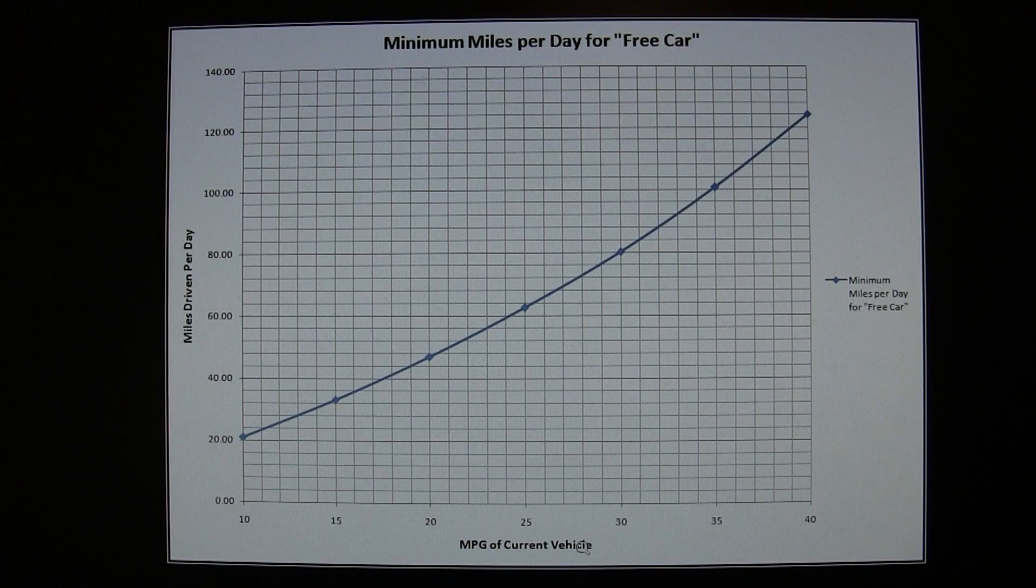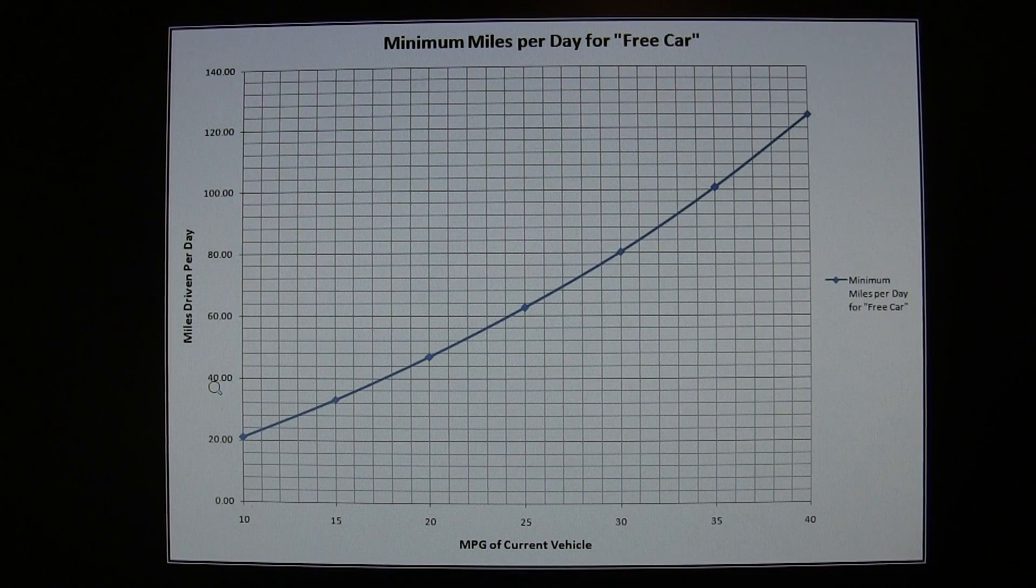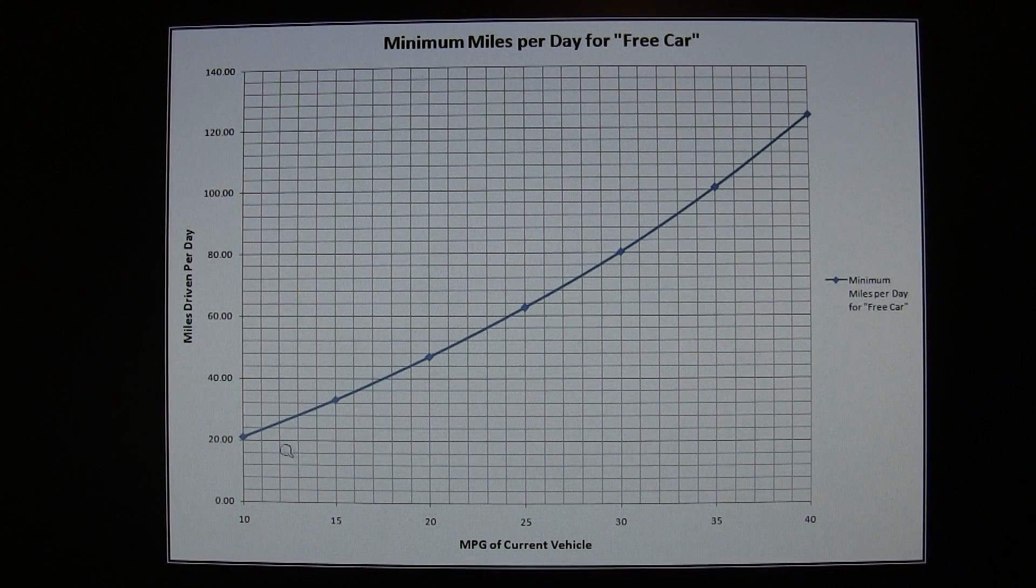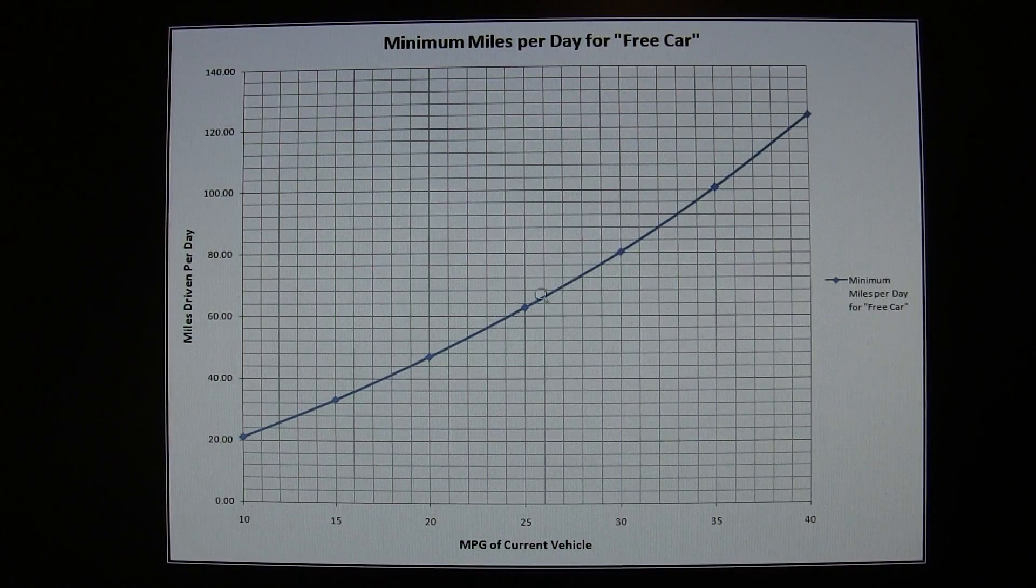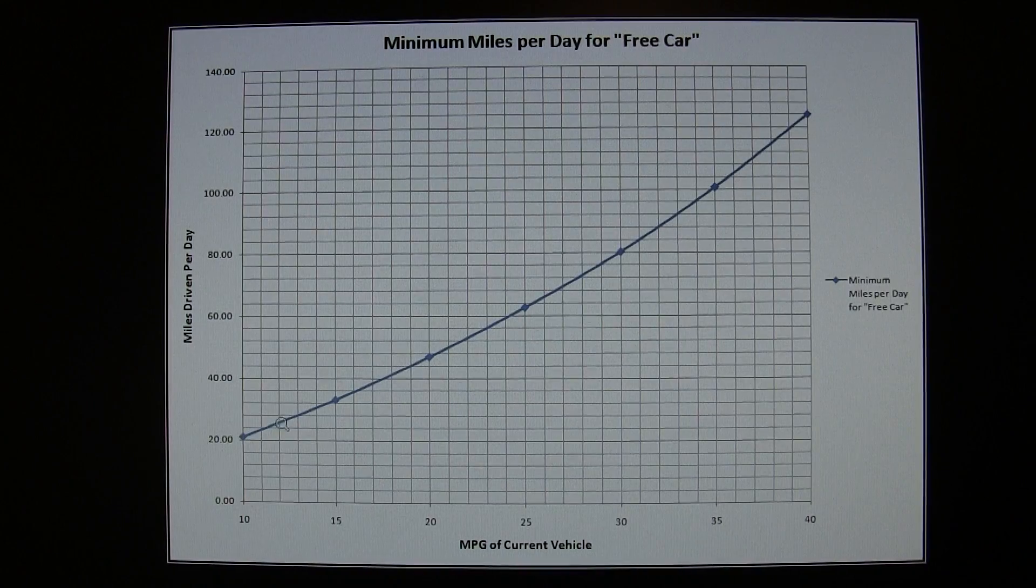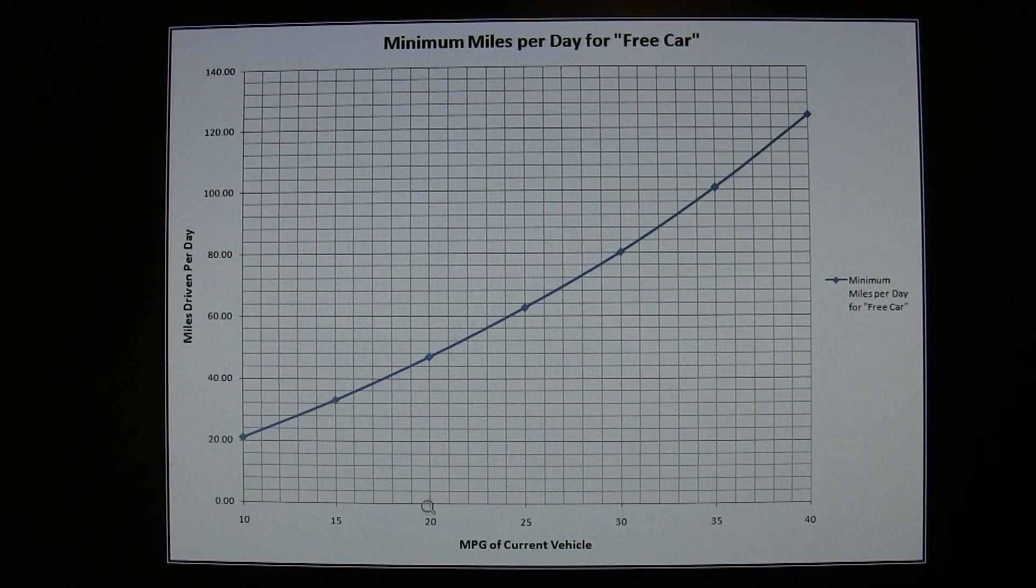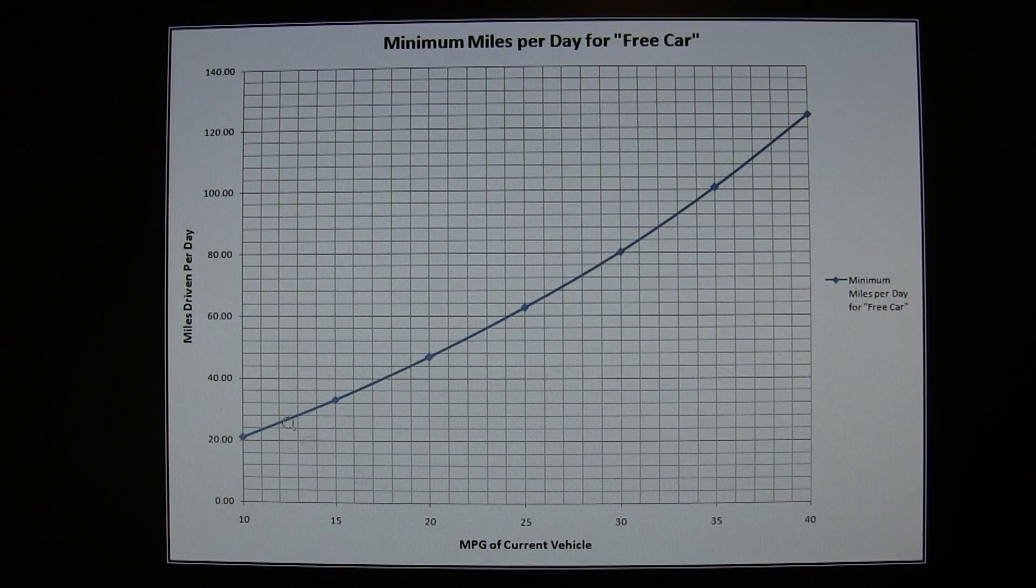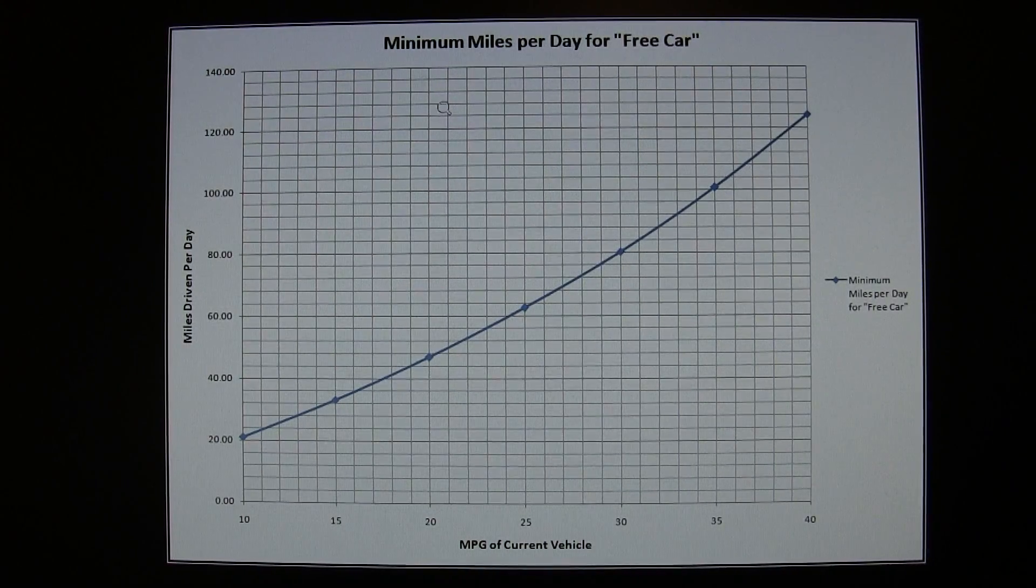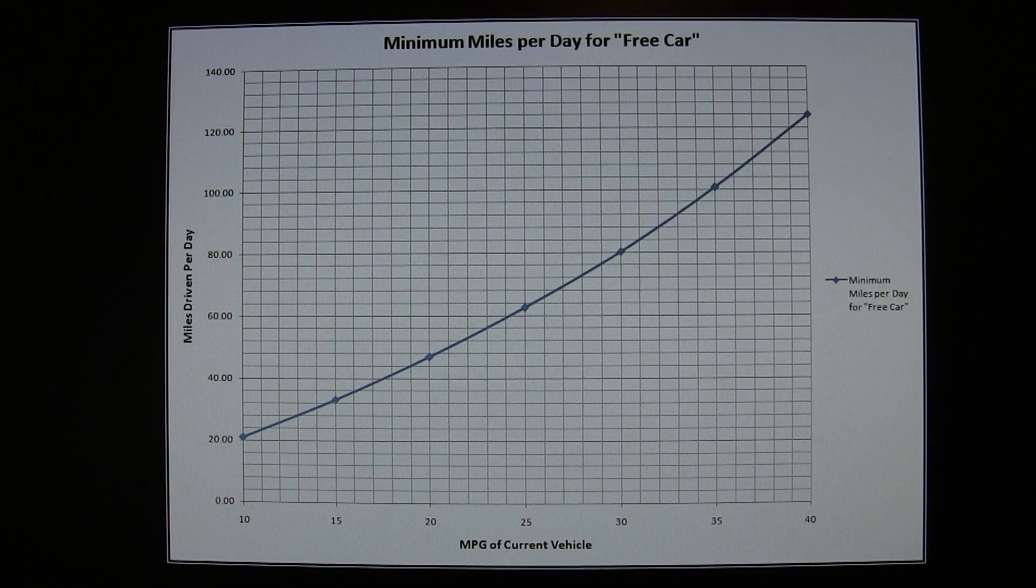On the bottom axis, we've got the miles per gallon of your current vehicle, and on the left-hand axis, we've got the miles that you drive in a single day. This line here represents the cutoff line of the minimum miles per day in order for this car to be free, or basically no extra cost. If your vehicle, for example, gets 20 miles per gallon, then it's going to be about 47 miles per day that you need to drive, or more, in order for it to come at no additional cost.